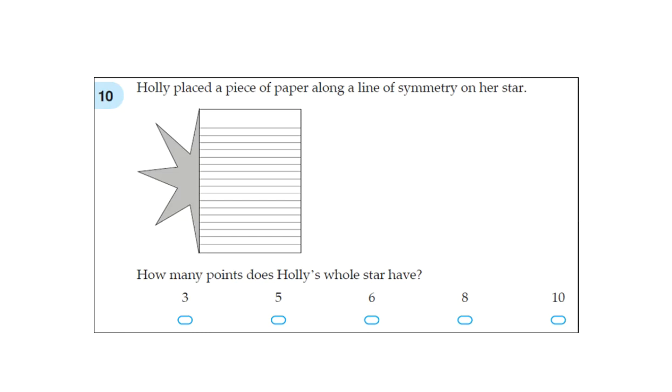Question 10. Holly placed a piece of paper along a line of symmetry on her star. How many points does Holly's whole star have? So let's say this is the first point, second point, third point. That part's easy.